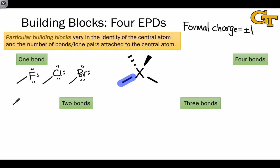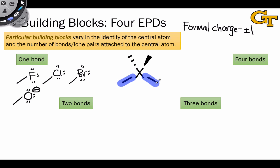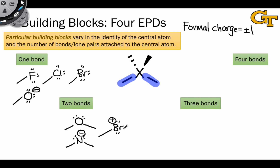One you may not have thought of is the anionic oxygen atom, which also has three lone pairs and one single bond, but is formally negative because the formal electron count here is 7 versus 6 for a neutral oxygen atom. Replacing oxygen with nitrogen gives rise to a building block with a negative charge on nitrogen. In some rare cases, you'll also see a halogen that is formally positive with two bonds and two lone pairs — also an instance of the two-bond tetrahedral building block.